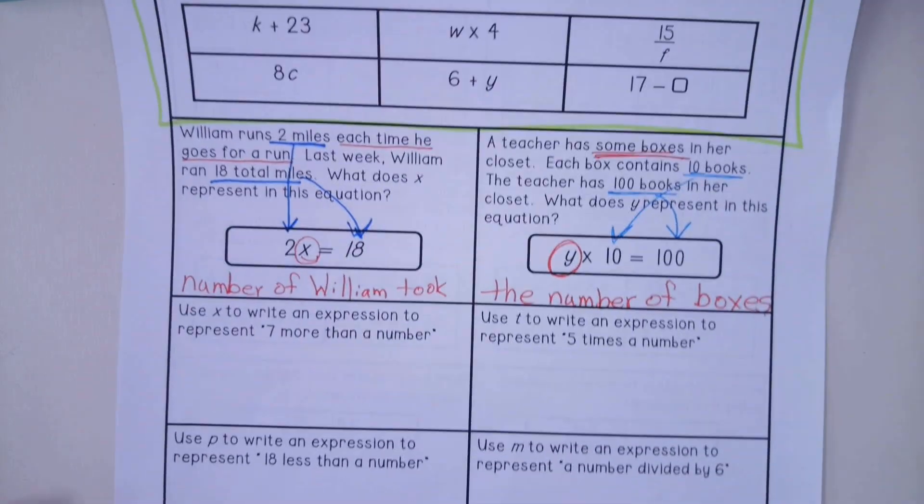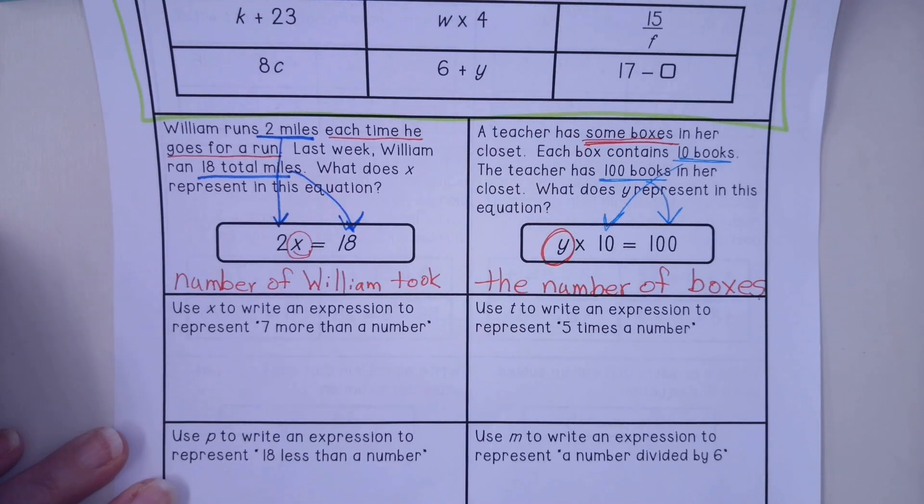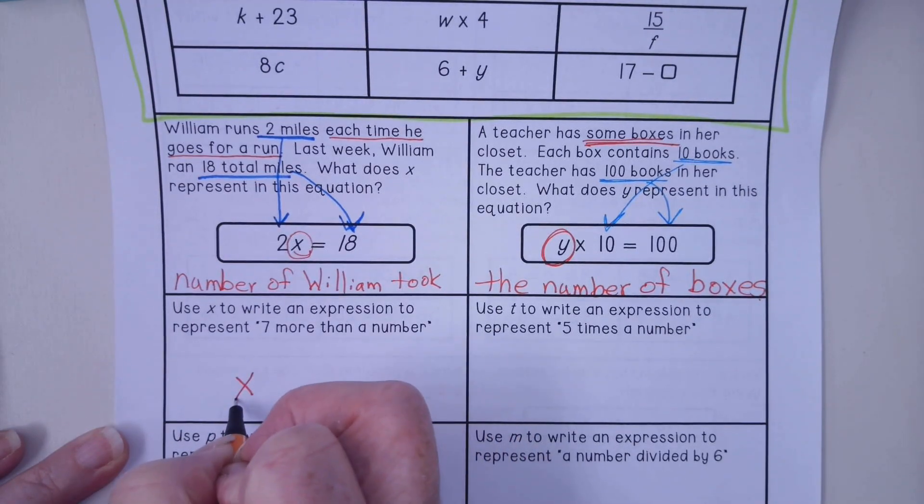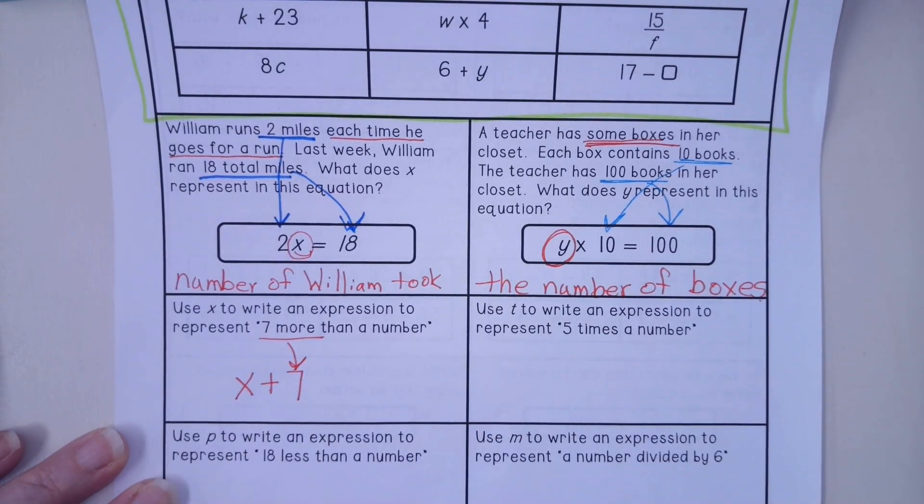All right, I'm going to do one more and that is going to be this problem right here. Use x to write an expression to represent seven more than a number. So our x is going to be seven more than a number. So x, more than a number, plus 7. All right, everyone work the rest of the problems on your own. We'll see you tomorrow.